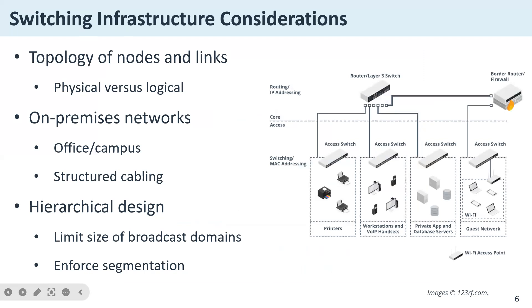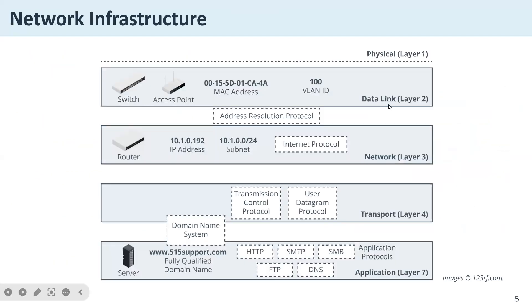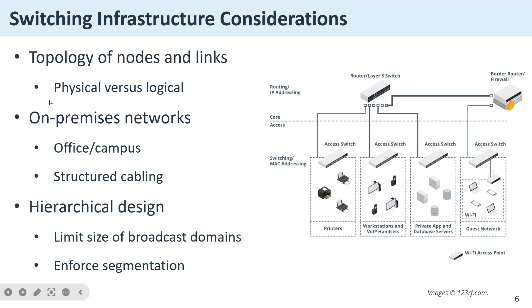Switching means moving packets from one point of your network to another — that's the responsibility of a switch. There are Layer 2 switches and Layer 3 switches that also perform routing functions. In your topology you can have a physical topology — where you place switches and routers room by room, floor by floor — and a logical topology covering IP addressing, MAC addressing, and gateway configuration.